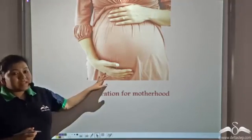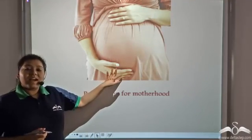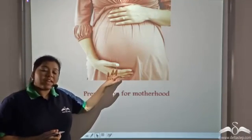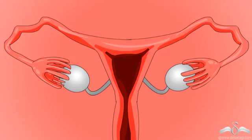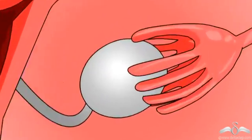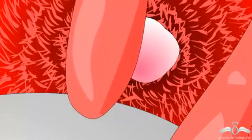A female's body has to prepare for motherhood. Every month, either of the ovaries ruptures to release an ovum, which is a female reproductive cell. Now let us see what happens inside the ovary.